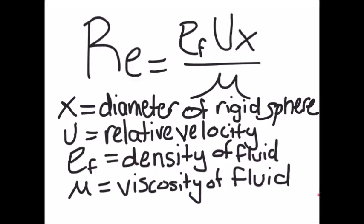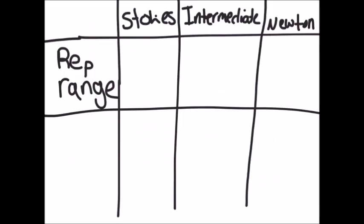This Reynolds number is used to define three regions of particle motion. The three regions are Stokes, Newtons, and Intermediate.